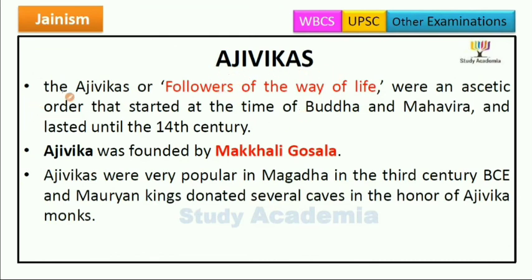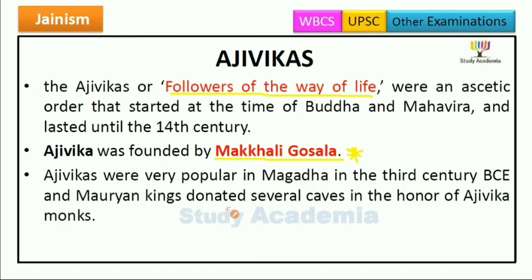The Ajivikas were followers of a way of life — an ascetic order that started at the time of Buddha and Mahavira and lasted until the 14th century. Ajivikas was founded by Makkali Ghoshala. They were very popular in Magadha in the 3rd century BC, and Mauryan kings donated several caves in honor of Ajivika monks.